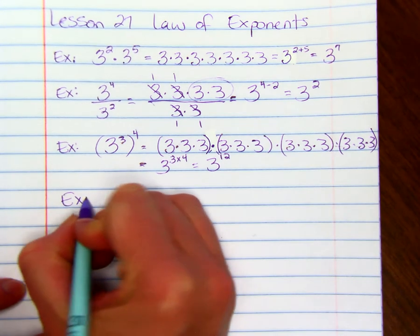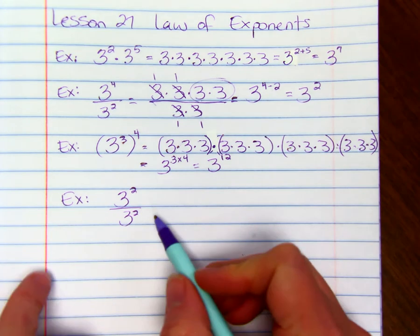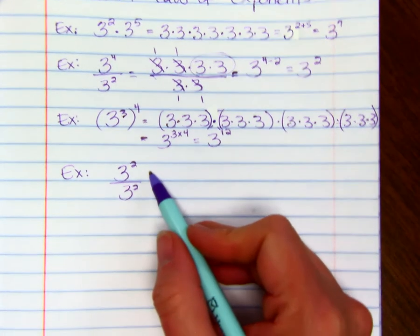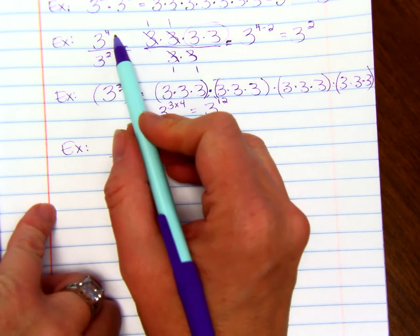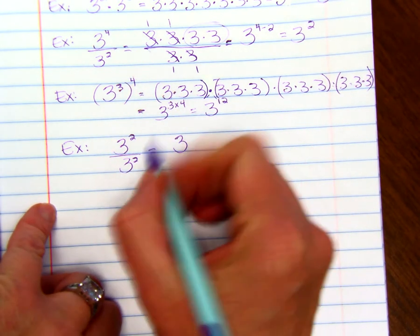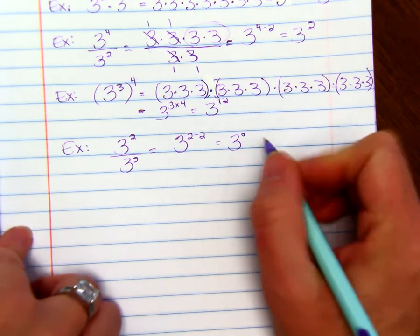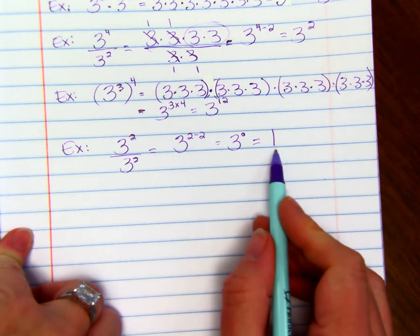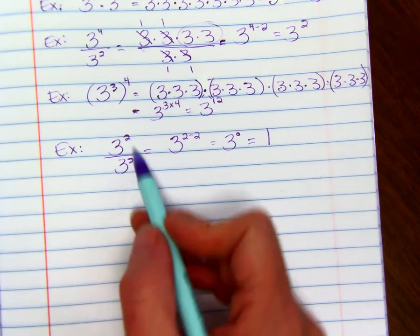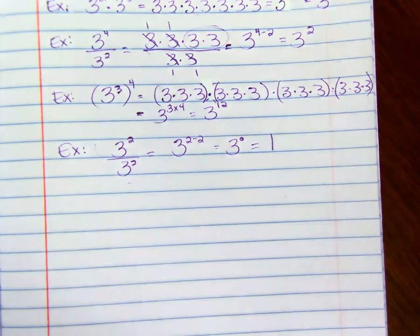So an example where we have the dividing, and we have the base is the same. And remember up here we said when we divide, we subtract. So we have 3 to the 2 minus 2, which is 3 to the 0 power. And I don't know if you remember, but anything raised to the 0 power is just 1. Which makes perfect sense because we have the same thing in the numerator as the denominator.